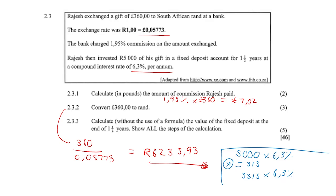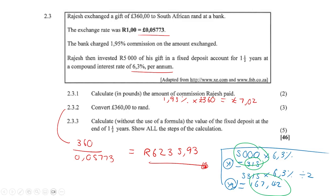In year two, we multiply 5315 by 6.3%, but it's not a full year — it's only a half year, so we divide the interest by two, giving us 167.42 Rands. So the final answer is the initial principal of 5000, plus 315 interest from year one, plus 167.42 interest from the half year.